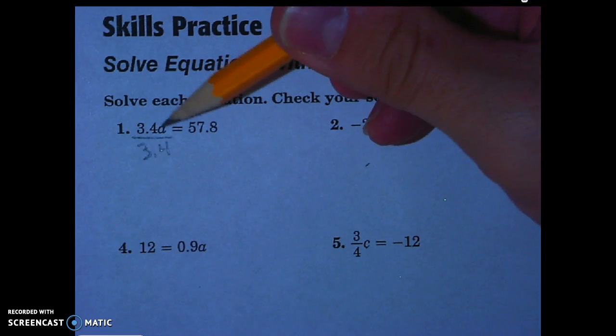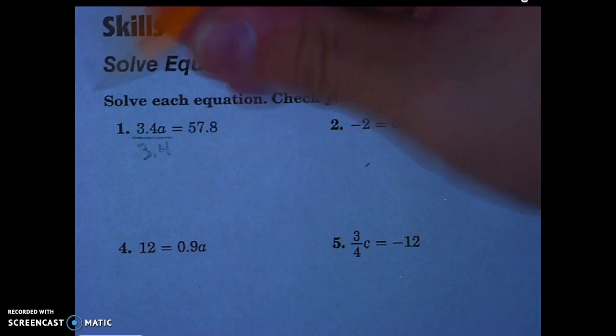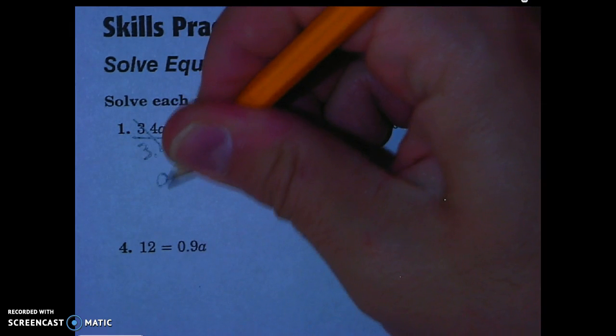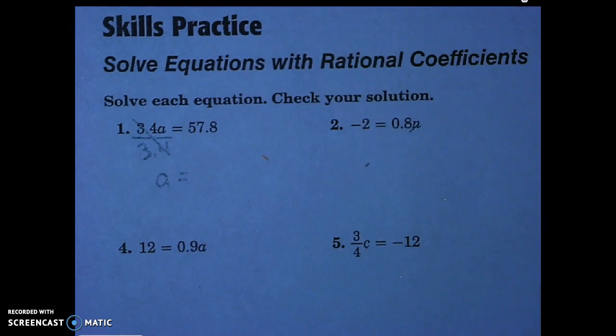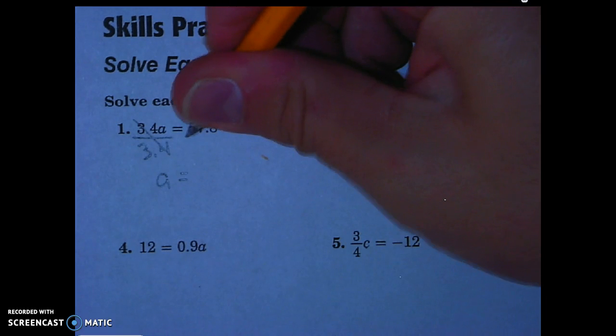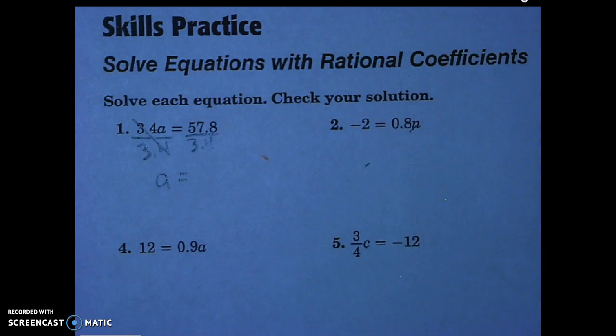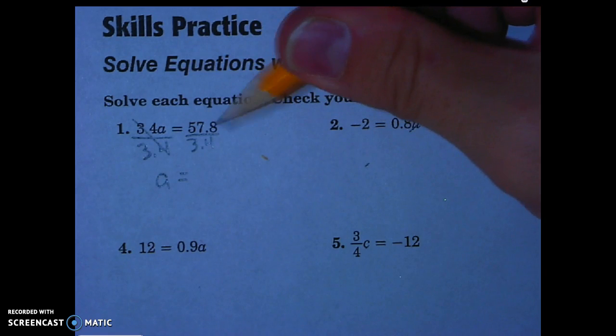Those opposite operations of multiplying by 3.4 and dividing by 3.4 cancel each other out, leaving our variable by itself on the left side of the equal sign. On the right side of the equal sign, I must also divide by 3.4. In doing division like this, the top always falls in to the right.